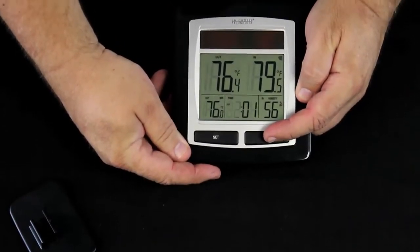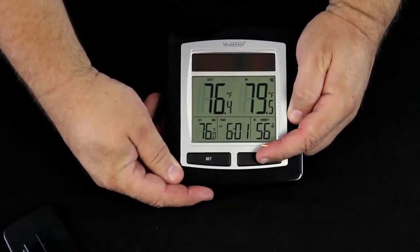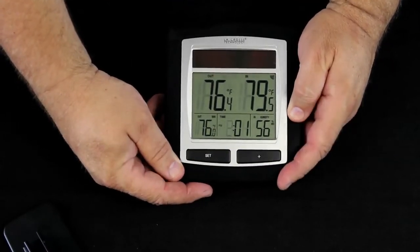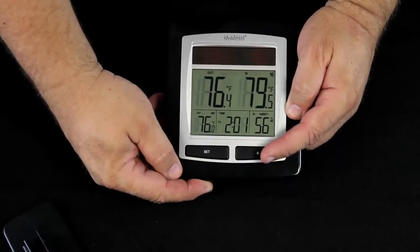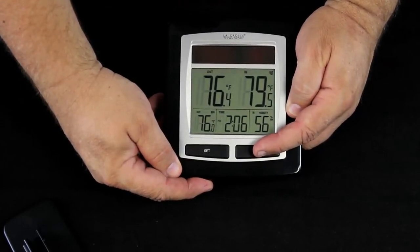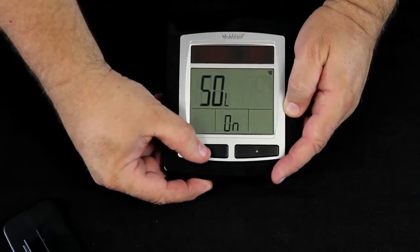We use the plus button to set the hours, watching the AM and PM indicators to make sure we're at the right time of day. Press set a second time, and the minutes are flashing. Again, the plus button will change those. Press set a third time.